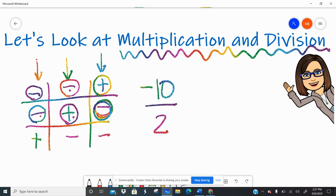remember the fraction bar means division. I ignore the signs. 10 divided by 2 is 5. And then I have a negative integer and a positive integer. So a negative and a positive make a negative.